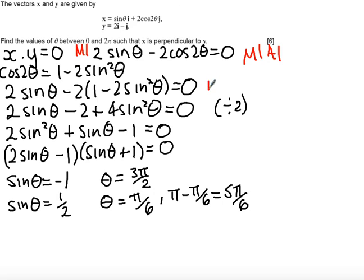Moving on, we get a method mark for which the net following marks are dependent on if you make this substitution for cos 2 theta. Finally, you get an accuracy mark if you found that theta can be equal to 3 pi over 2. And you get another accuracy mark if you've got both the values pi by 6 and 5 pi by 6.